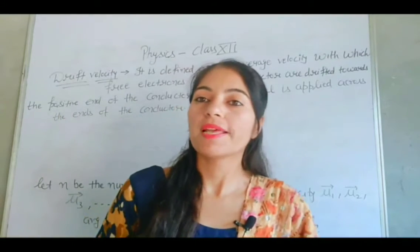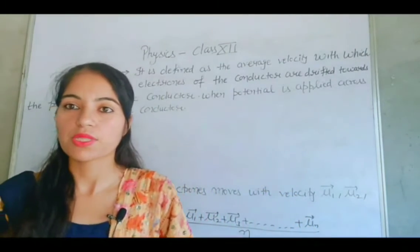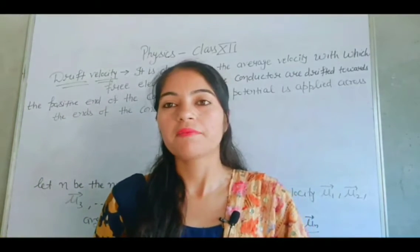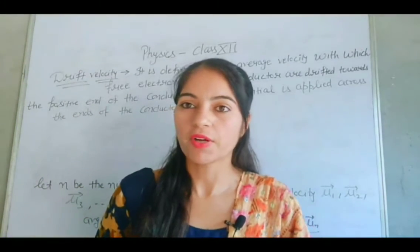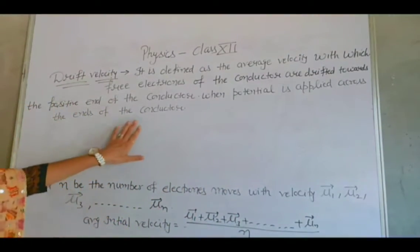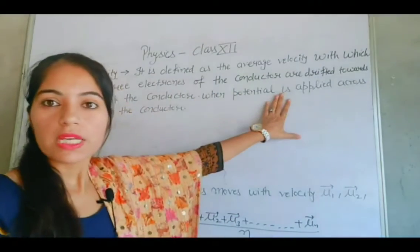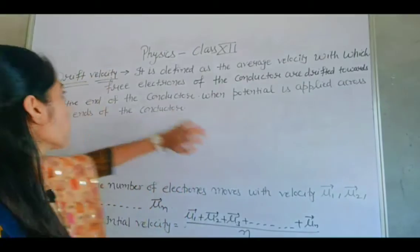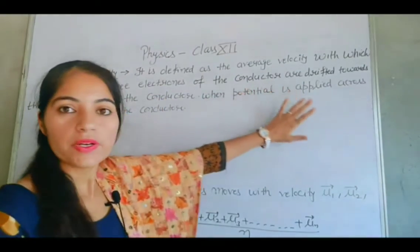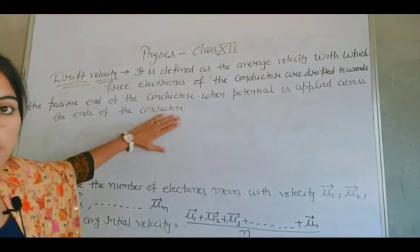This topic is related to your second unit, current and electricity. Without wasting time we will start our topic. The drift velocity is defined as the average velocity with which the free electrons of the conductor are drifted towards the positive end of the conductor.